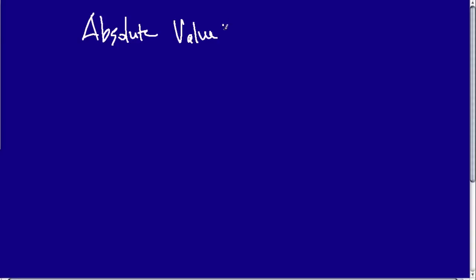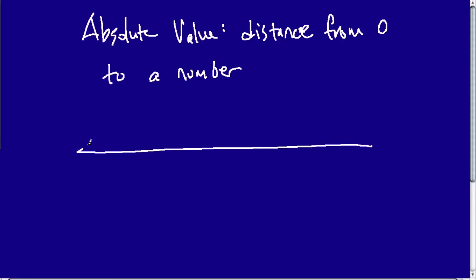The absolute value is a distance, and specifically, it's a distance from 0 to a number. So when you measure distance and you have a ruler and you're measuring, here's 0. Let's say, draw a number line, right in the middle we have 0.